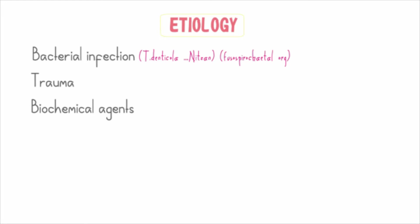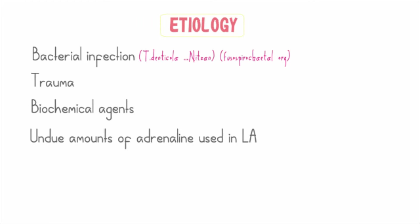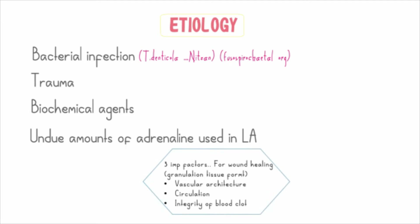Proper wound healing is very important to avoid complications such as dry socket. The three important factors for granulation tissue formation in an extraction socket include: the vascular architecture and circulation in the area of extraction, and the integrity of the blood clot which forms after extraction. These etiological factors can be remembered with a mnemonic.